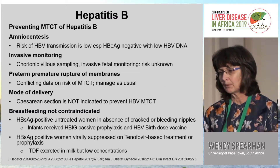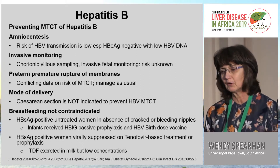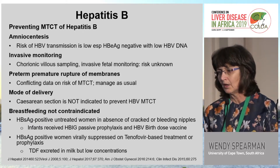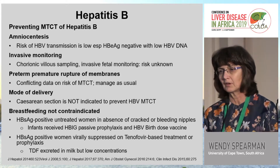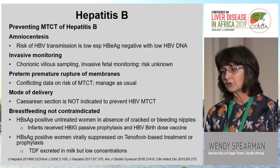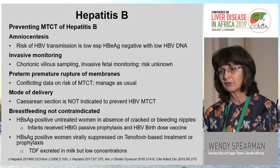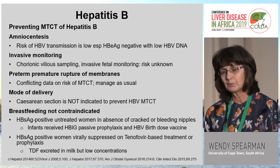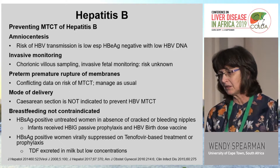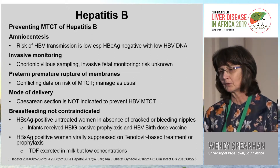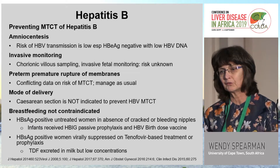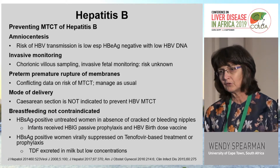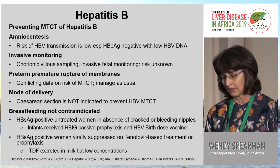Regarding other risk factors: for amniocentesis, the transmission risk is low, particularly in HIV-negative women. For invasive monitoring with chorionic villus sampling, the risk is unknown. Data on preterm premature rupture of membranes is conflicting and guidance is to manage as usual. Cesarean section is not indicated to prevent mother-to-child transmission, and breastfeeding is not contraindicated, particularly when the infant has received both HBIG and the birth dose. There is a risk if nipples are bleeding or cracked and the mother is not virally suppressed. Those virally suppressed on tenofovir for treatment or prophylaxis can breastfeed; although tenofovir is excreted in milk, concentrations are low with no documented poor infant outcomes.